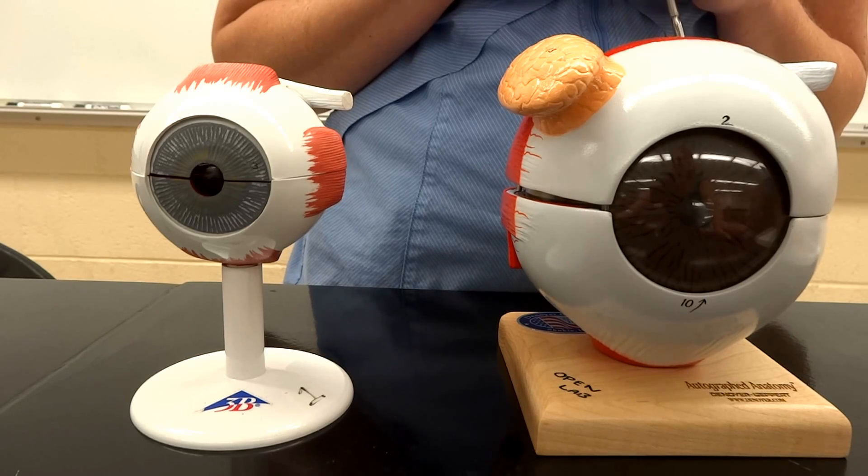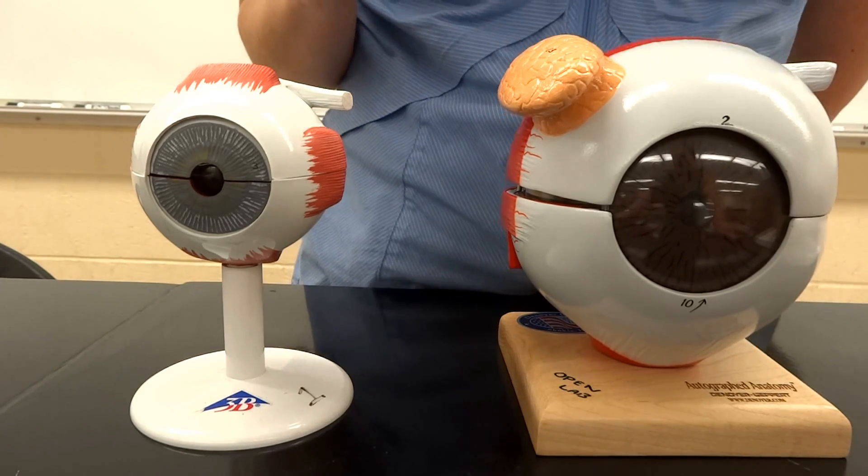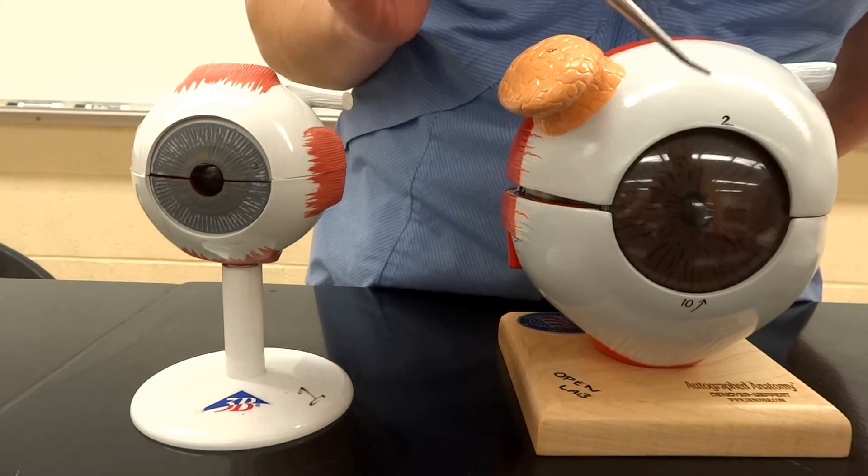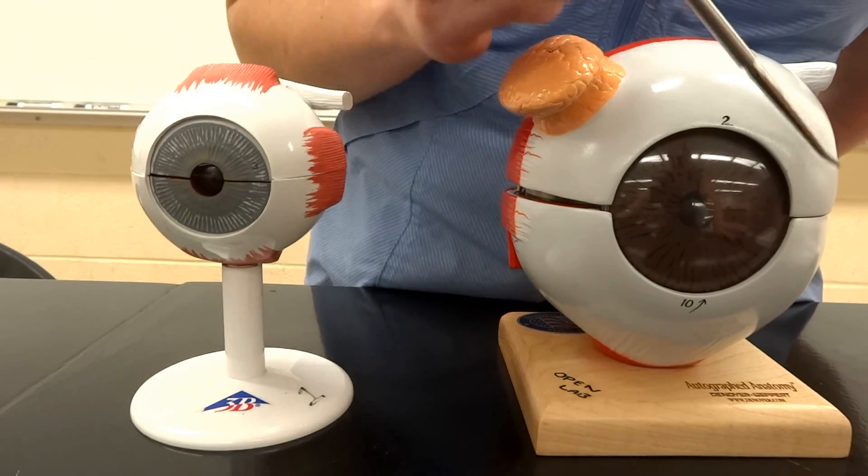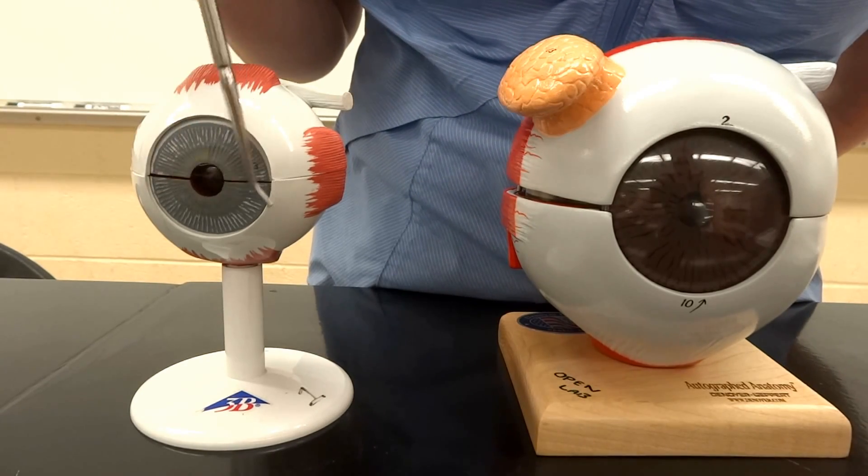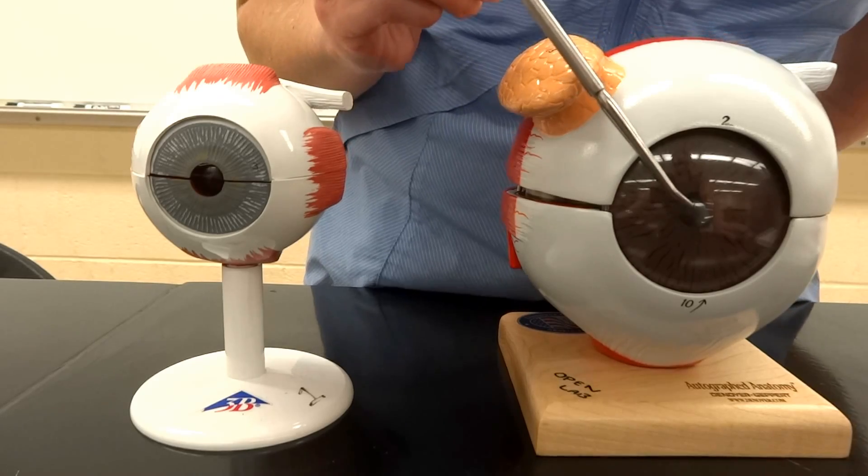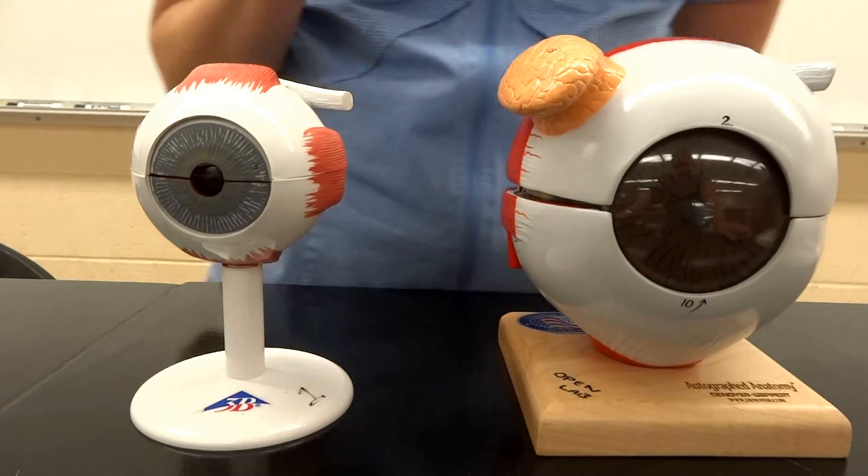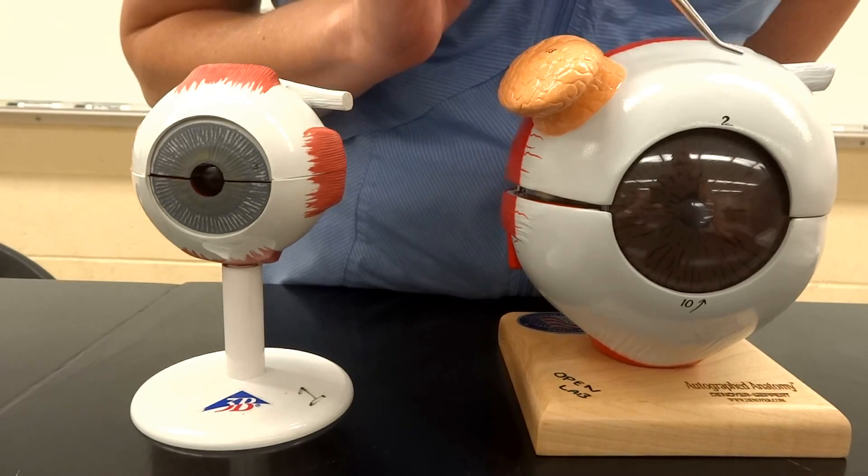So we're going to start with the fibrous tunic. This is going to be the outer layer of the eye. There are two pieces. The sclera, which is the white part, so all of the white part of the eye. And the cornea, which is going to be the transparent, clear portion that happens to be missing on the eye. But it's over here. So that's what our contacts are going to sit right on top of if you're lucky enough not to be able to see when you wake up in the morning.